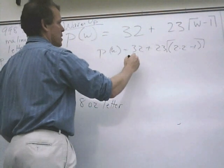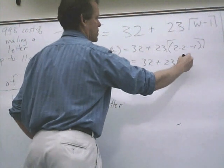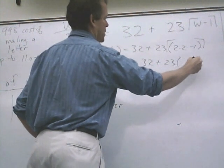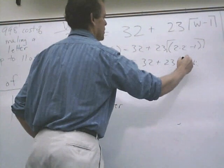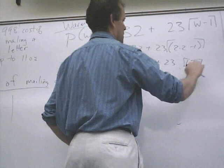So that equals 32 plus 23 times 1.1. What's that? 1.2. I'm going to get rid of these parentheses. Round it up.